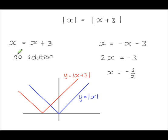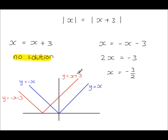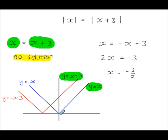If you're wondering why there was no solution from the first equation, look at the graphs for y equals the modulus of x plus 3 and y equals the modulus of x. Working out the individual equations for all four lines, you can see that y equals x and y equals x plus 3 are parallel to each other — they will never meet. That's why there's no solution for that equation.